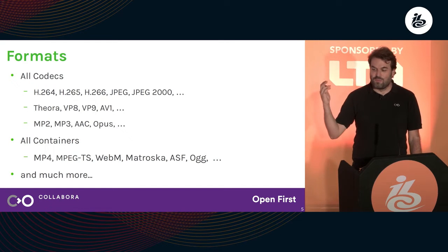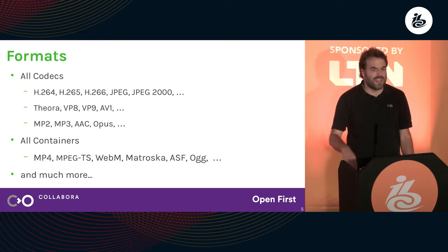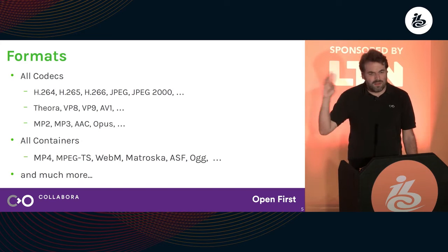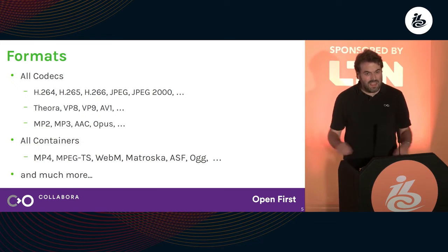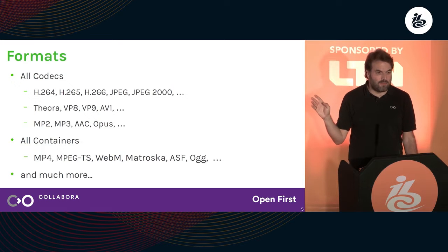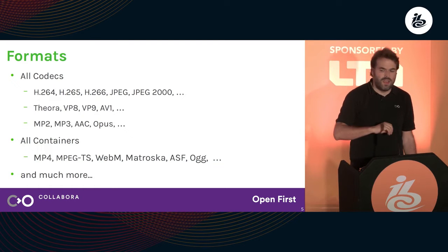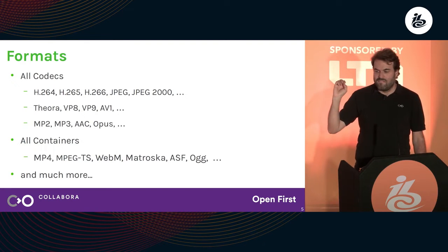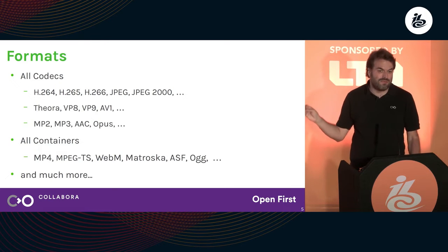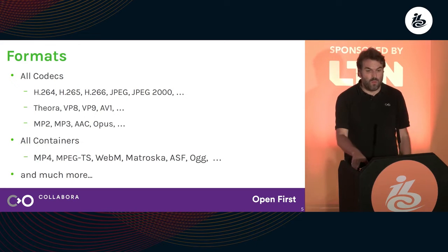For the broadcast world, GStreamer supports basically all the codecs out there — things like H.264, H.265, all the MPEG codecs, JPEG, and so on. It supports all the open codecs like VP8, VP9, AV1, and basically all the audio codecs too. We support basically everything out there, including everything that FFMPEG does, because we actually have FFMPEG as one of our plugins. We also support all the common containers: MP4, MPEG transport stream, WebM, Matroska, and also legacy containers like ASF.